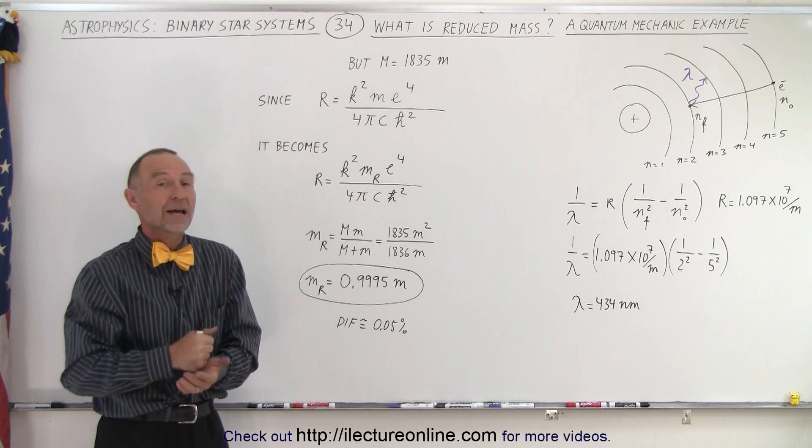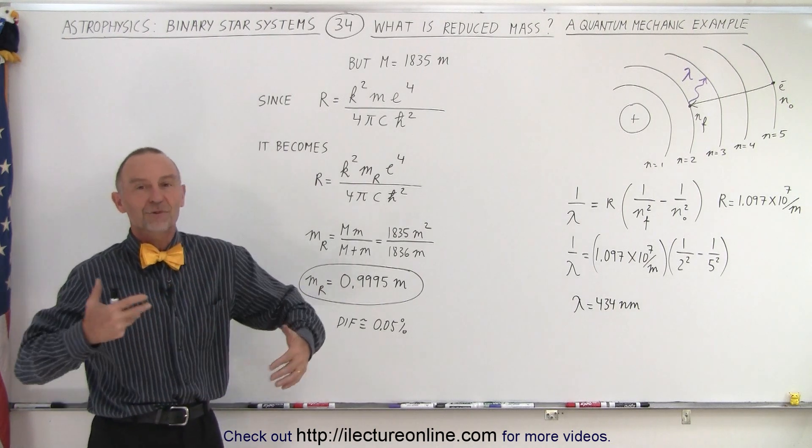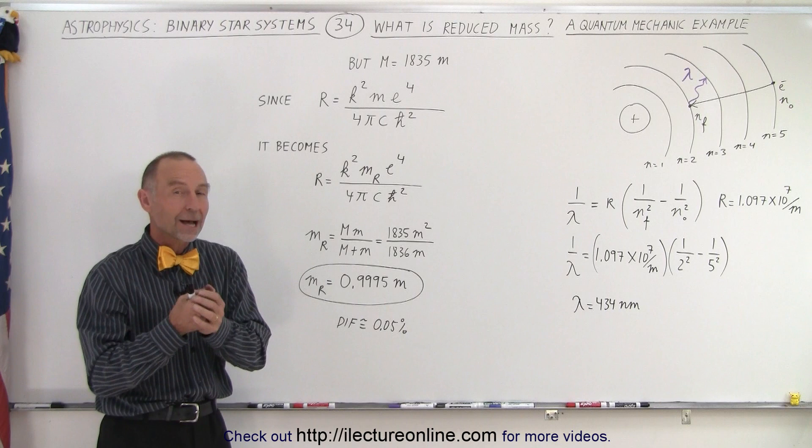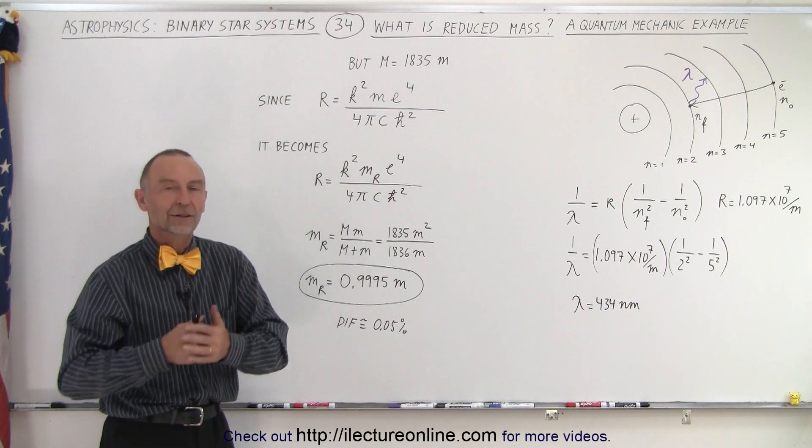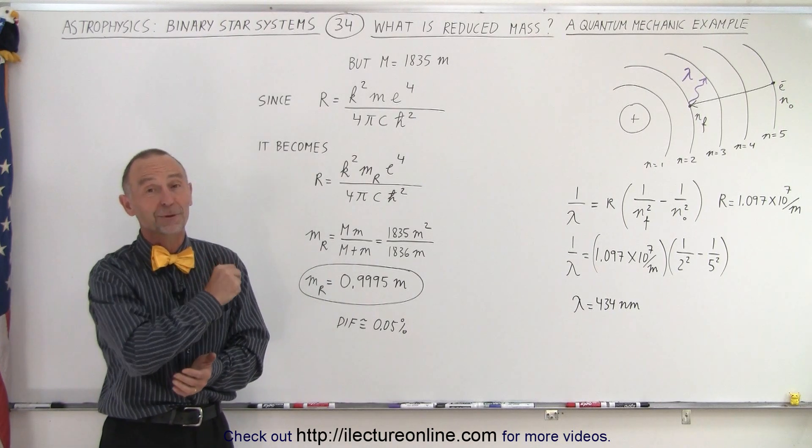That's why the reduced mass is a very important concept whenever objects are revolving around a common point like in a binary star system. And that is how it's done.